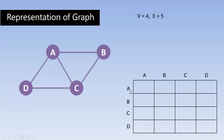We will map connections from each node to every other node. Starting from node A: A to A — there is no edge from a node to itself, so this is 0. A to B — there is an edge, so this is 1. A to C — there is a connection, so 1. A to D — there is a connection, so 1.